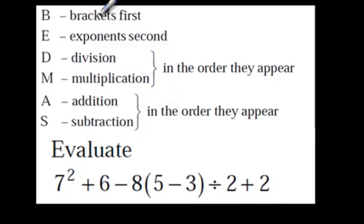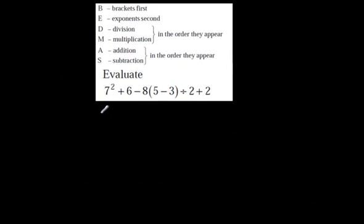All right, let's do this question. What does it say up top? Brackets first. Okay, so you can rewrite things. 7 squared plus 6 minus 8, bracket. Now, inside the brackets, we have 5 minus 3. 5 minus 3 is 2, as you're telling me. I can hear you. Divided by 2, and then plus 2.